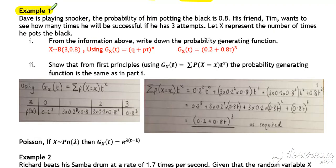So in example one, we've got Dave and Tim playing snooker. We have X represent the number of times that he pots the black. So the number of times that Dave pots the black. So we've got a binomial, three trials, probability of success 0.8. So to write down the probability generating function...